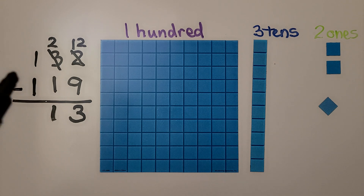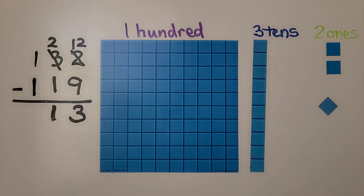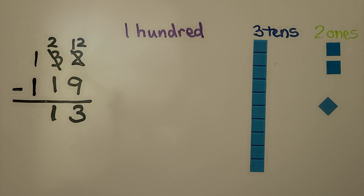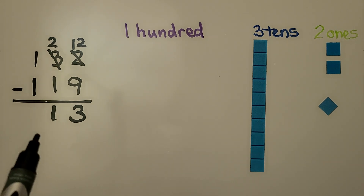We have one hundred we need to take away, so we need to take away this one hundred. We've only got a ten and three ones — we've got thirteen.